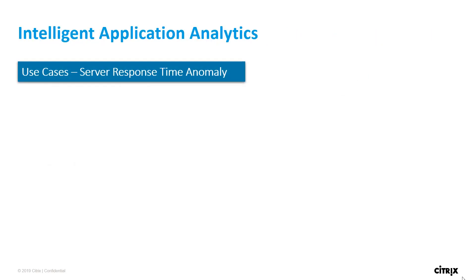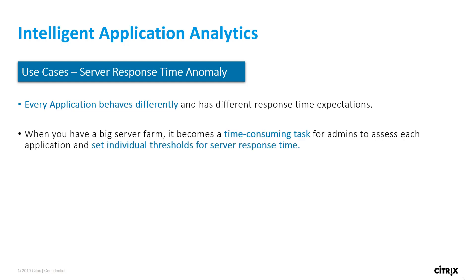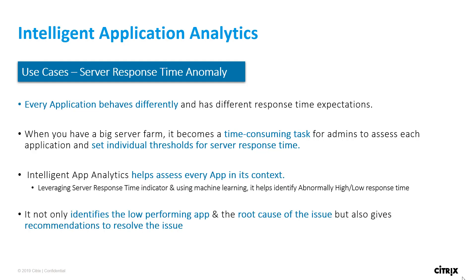This is exactly what Intelligent Application Analytics helps with. Let's look at this with the help of a use case: server response time anomaly. Every application behaves differently and has different response time expectations. In a big server farm, it becomes a very time consuming and tedious task for admins to assess each application, understand their response time expectations and set individual thresholds for server response time across each app. Intelligent App Analytics helps assess every application in its own context. Leveraging the server response time indicator and using machine learning, it helps identify abnormally high and abnormally low response times. It not only identifies the low performing app and the root cause of the issue but also gives recommendations to resolve the issue.